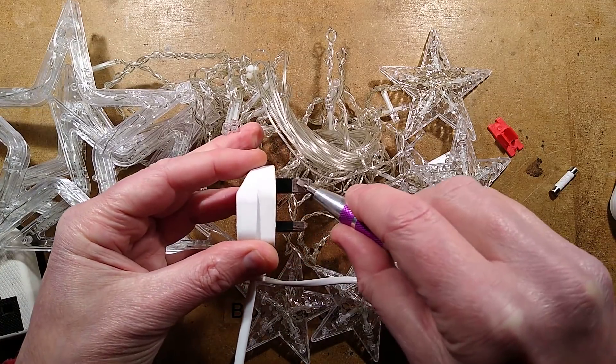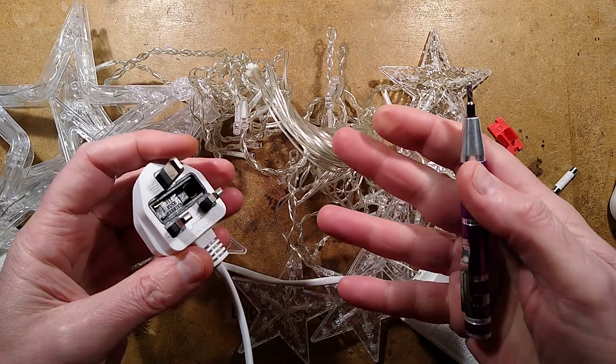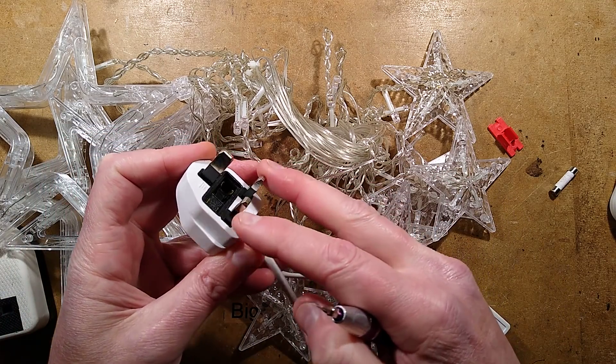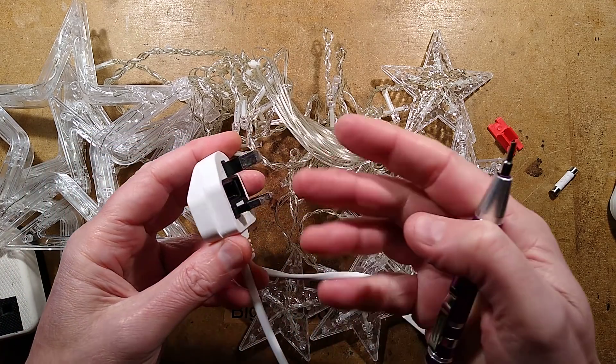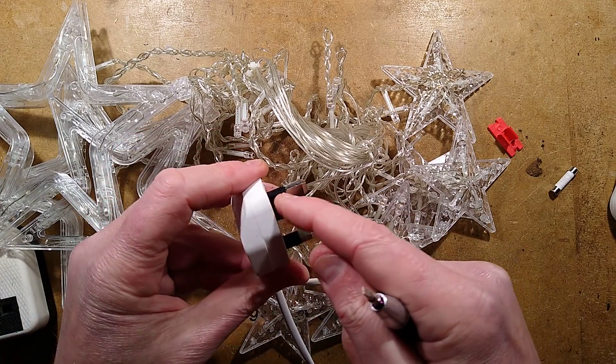The earth pin has that plastic spacer on it, which it's not so critical in this instance, since it's really just been used to open the shutters for the live and neutral. But if that plug was used in an actual earth appliance, it would not be good because it wouldn't make a connection.